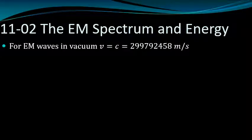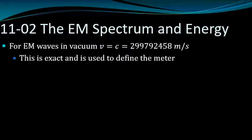For electromagnetic waves in a vacuum, the speed is exactly 299,792,458 meters per second. This is exact because we have an exact time for seconds, and the meter is defined based on the speed of light.